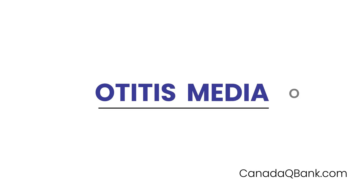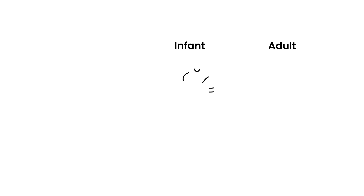Otitis media is the topic, and I'll abbreviate it OM in this video. Essentially, otitis media happens in children most commonly, but it can happen in adults as well. The reason it happens a lot in children is because in kids, you have a structure known as a eustachian tube that is quite different than in adults.